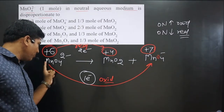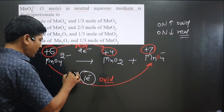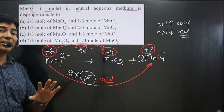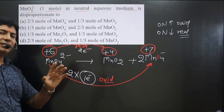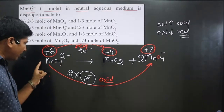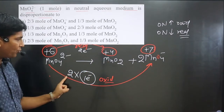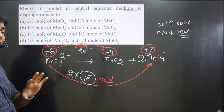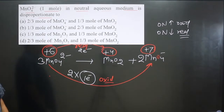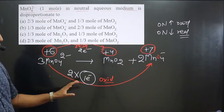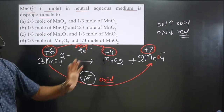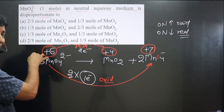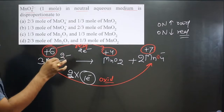To balance the number of electrons, we multiply the oxidation side by two. But we must be careful because this is a disproportionation reaction — the same molecule undergoes both oxidation and reduction. One molecule undergoes reduction and two molecules undergo oxidation, so the total number of molecules on the left side is one plus two, which equals three. We take one molecule from reduction and multiply two for oxidation: two plus one equals three molecules.